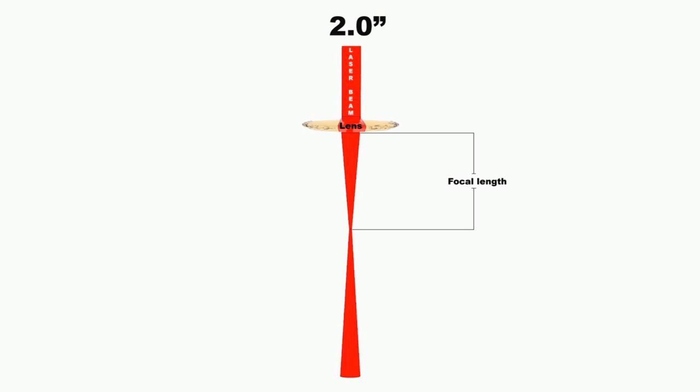In this case the focal length is 2 inches since it's a 2 inch lens. The focal plane or focus point is here, which is the smallest diameter of the laser beam in its transition between convergence and divergence. When you are focusing onto the material, you are setting the distance between the lens and the material to this point.